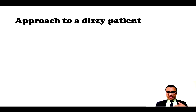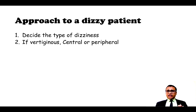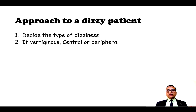There are various steps which should be followed in the history and examination. The first step is to decide what is the type of dizziness. There are five main types of dizziness. The second step is, if it is vertiginous type of dizziness, decide whether it is central or peripheral vertigo.